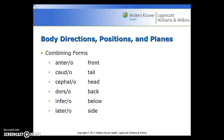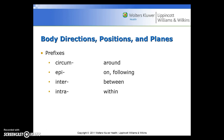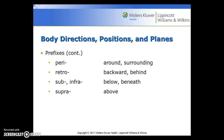Combining forms for body directions, positions, and planes include: antero for front, caudo for tail, cephalo for head, dorso for back, infero for below, lateral for side, medio for middle, postero for back, proximo for near point of origin, supero for above, ventro for belly, circum for around, epi for on or following, inter for between, intra for within, peri for around or surrounding, retro for backward or behind, sub/infra for below and beneath, and supra for above. Spend a lot of time studying this section and watching the video.